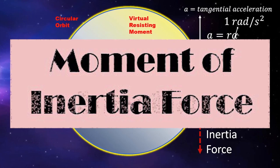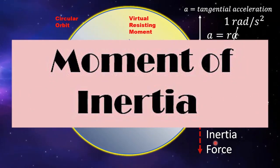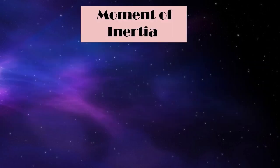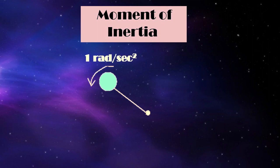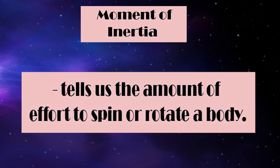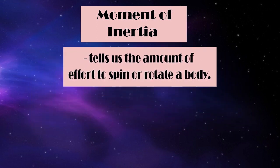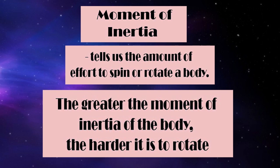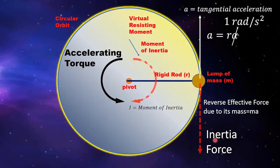Since this moment is caused by the inertia force, we can call it the moment of inertia force, or simply moment of inertia — the moment caused by the inertia of a body. The moment of inertia is the moment of resistance whenever we try to rotationally accelerate an object at the basic unit rate of one radian per second squared. The greater the moment of inertia, the harder it is to rotate; the lesser the value, the easier it is to rotate.